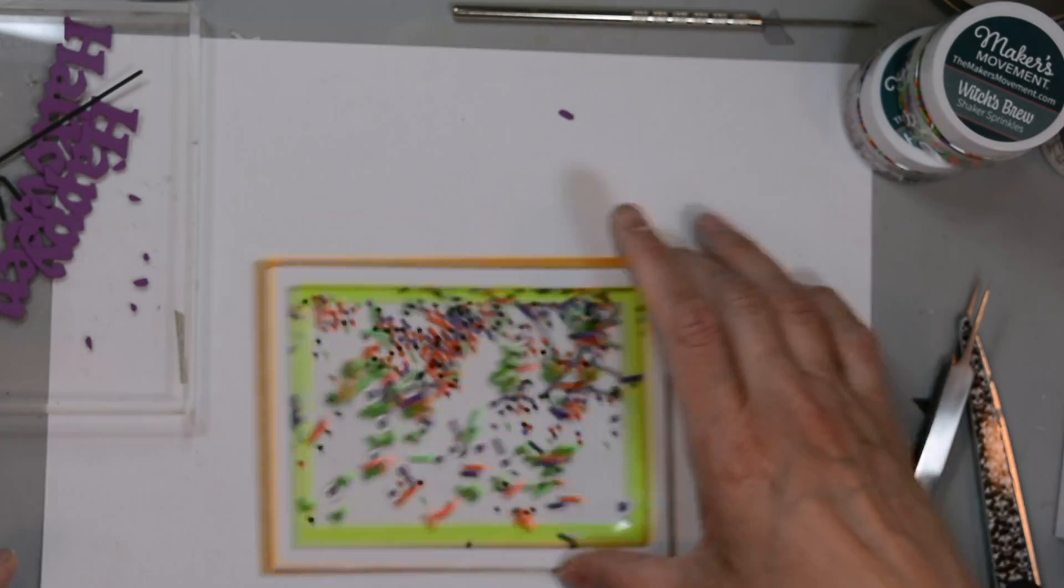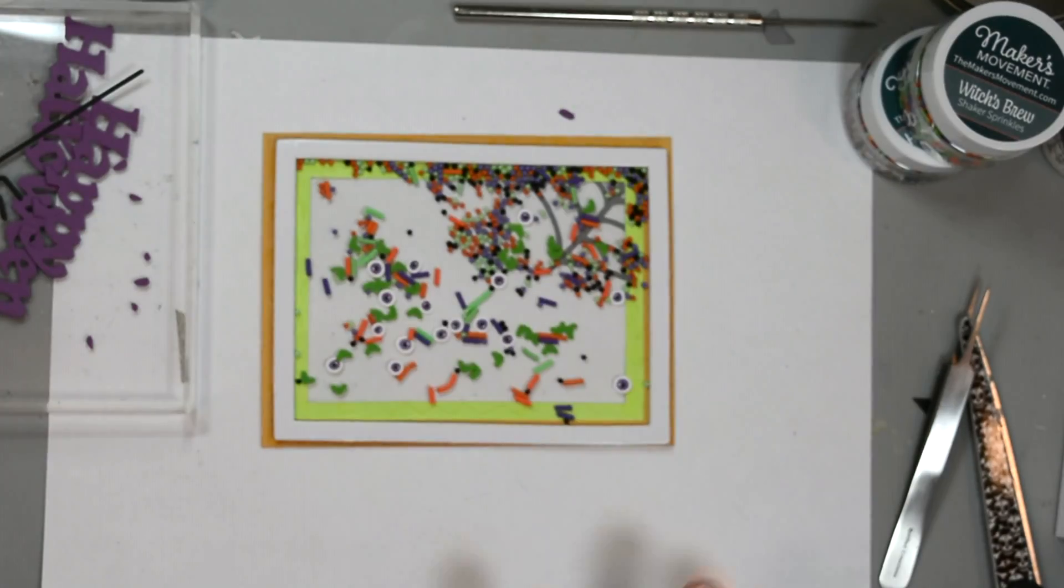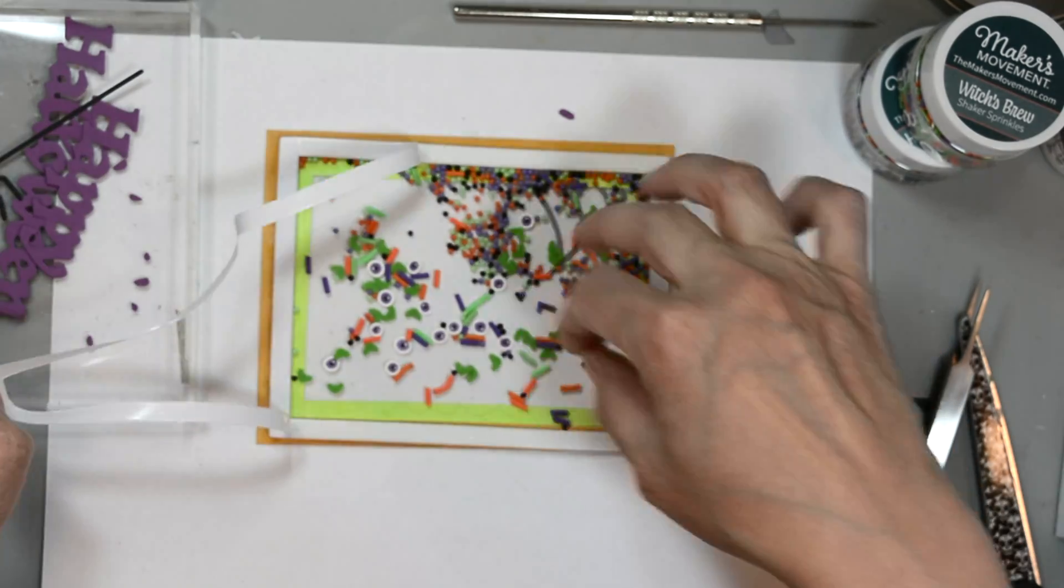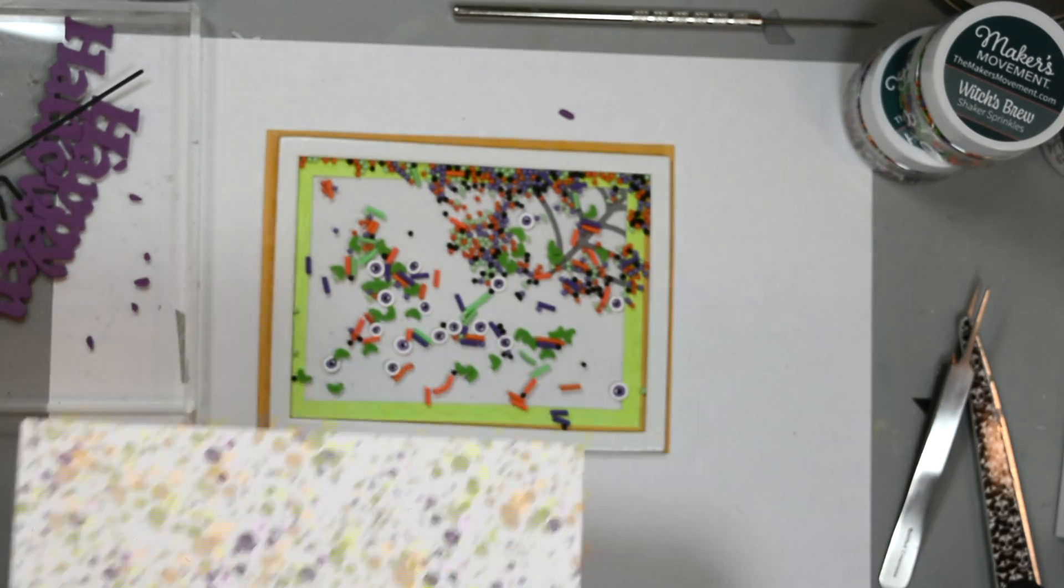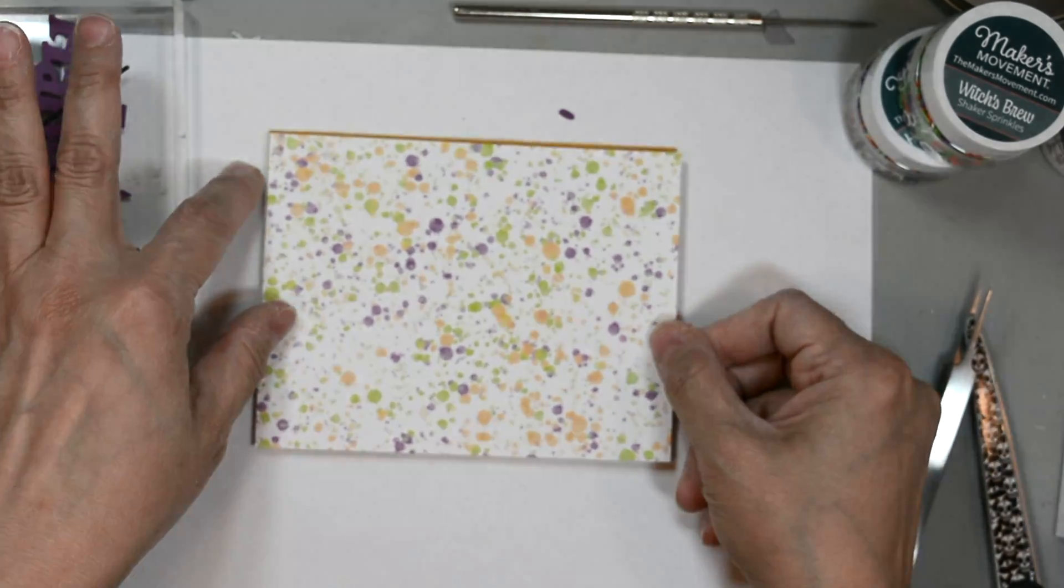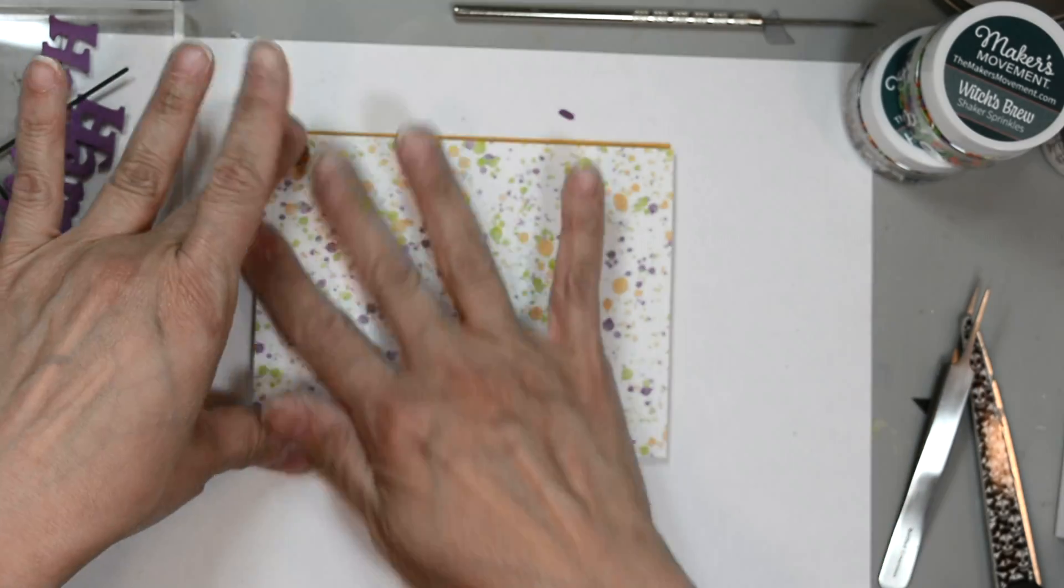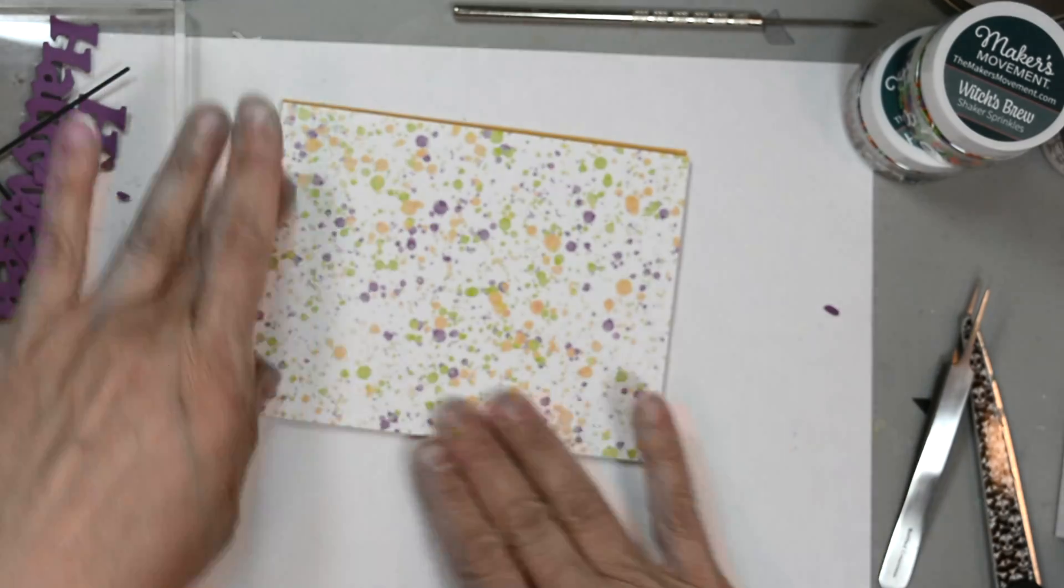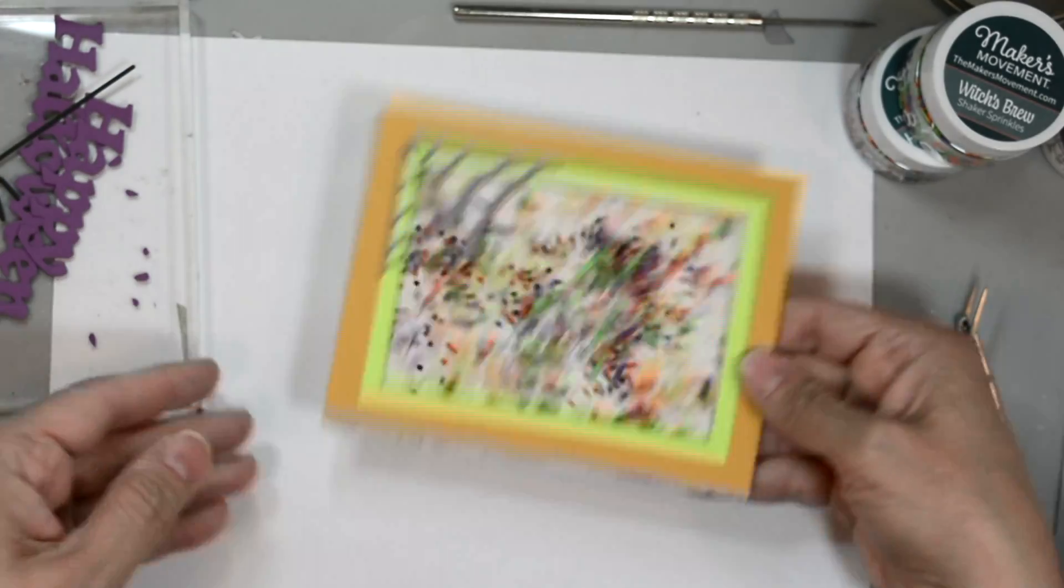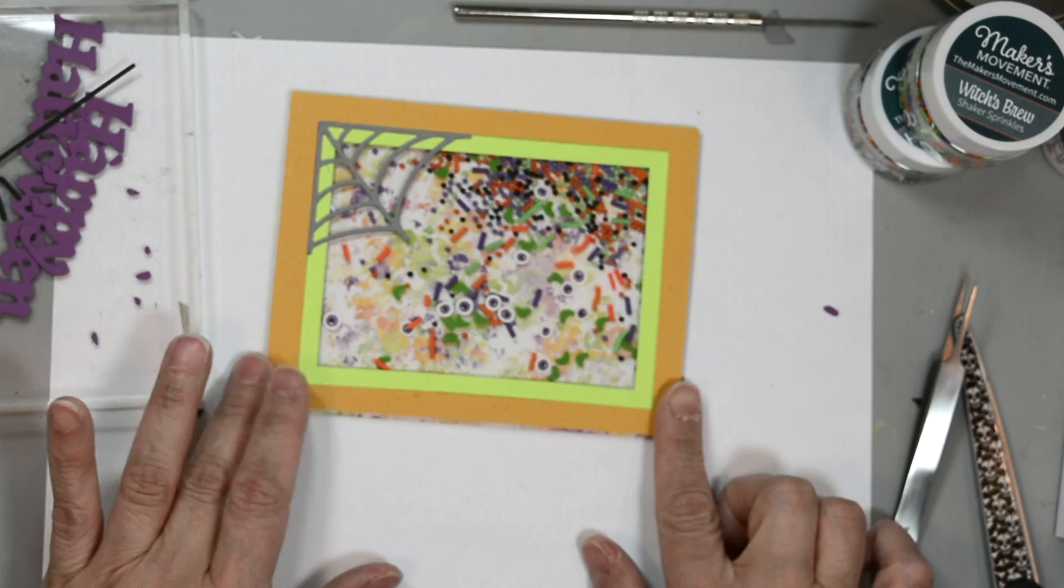And then I'll remove the protective layer or backing from this part here, the inside, going slowly so my sprinkles don't pop up everywhere. And I go ahead and adhere the pattern paper from the tricks and treats paper pad. Not die pads, paper pad.